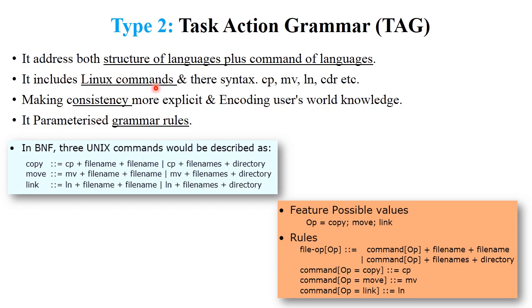Task Action Grammar (TAG) is generally used in Linux commands. It makes consistency more explicit and encodes the user's world knowledge. It parameterizes different grammar rules. In BNF, Unix commands would be used — for example, copy: cp plus filename plus directory, meaning you copy a filename into a particular directory. But in TAG, a particular variable called 'op' (operations) is used. Operations include copy, move, or link. So you would write: command_op plus filename plus directory, meaning it analyzes different operations within one syntax or command.